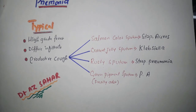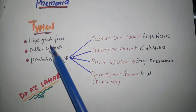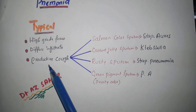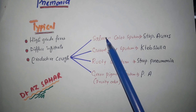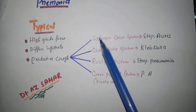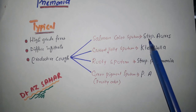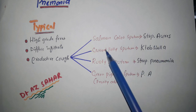In typical pneumonia, there will be high grade fever, diffuse infiltrate, and productive cough. The productive cough can present differently — salmon color sputum, the cause of which is Staphylococcus aureus.